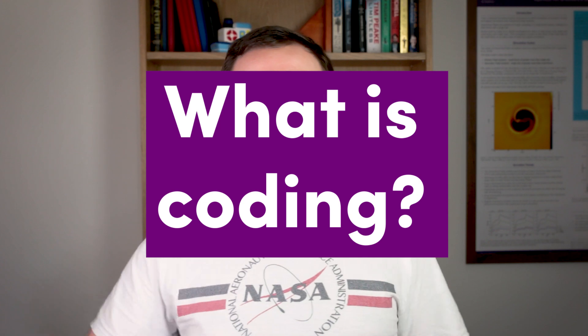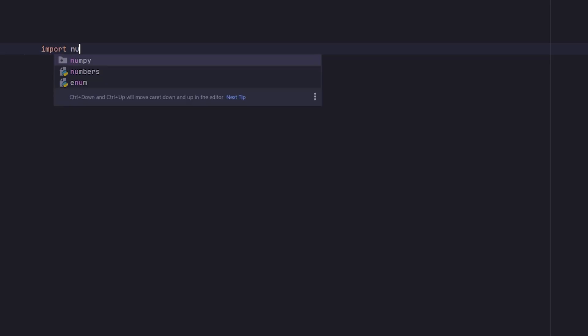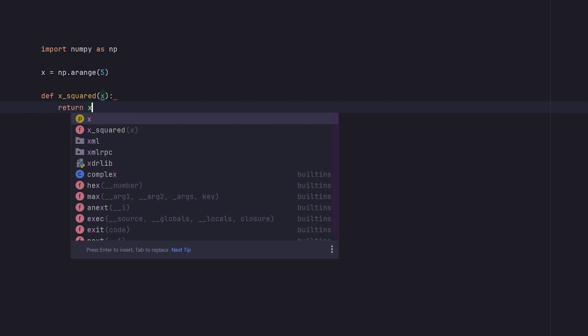Before we launch into how I use code, let's just be clear on what I mean when I talk about coding. When I talk about coding, I'm talking about computer code or programming. This is a tool used everywhere in academia and industry. It's how we tell a computer what we want it to do.